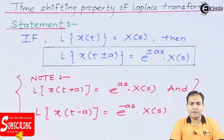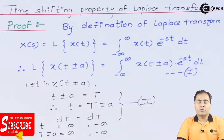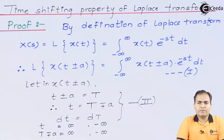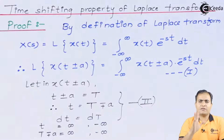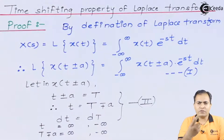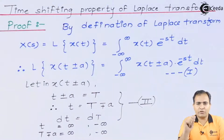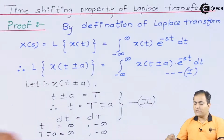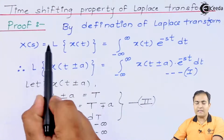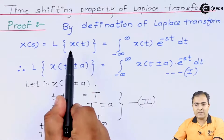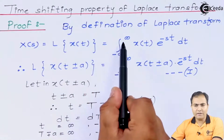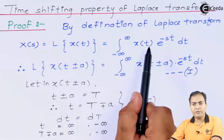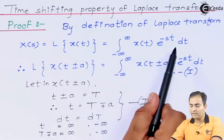Let's study the proof by definition of Laplace transform. We can say X(s) is the Laplace transform of the time signal x(t), and by definition X(s) is nothing but the integration over the range from minus infinity to infinity of x(t) multiplied by e to the power minus st, dt.